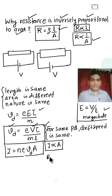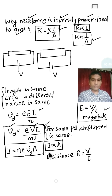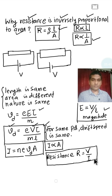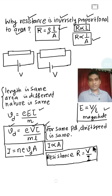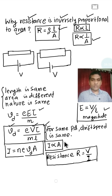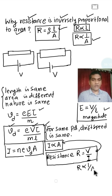Now, we know resistance from Ohm's law: R equals V divided by I, where current is in the denominator. Since V is the same and current varies or depends on the area of cross section, comparing these two relations, we can write R is inversely proportional to the area of cross section of the conductor.